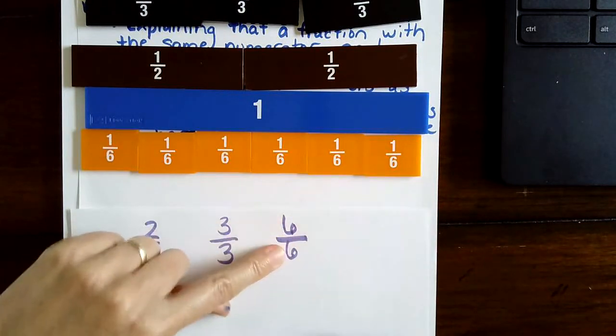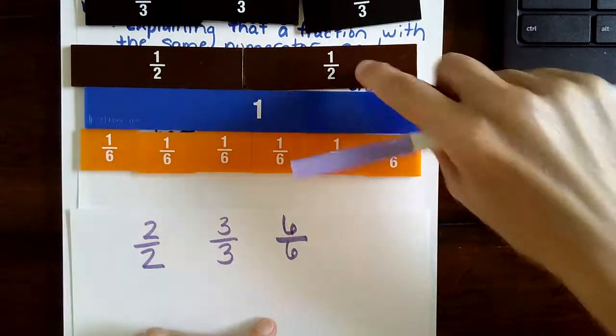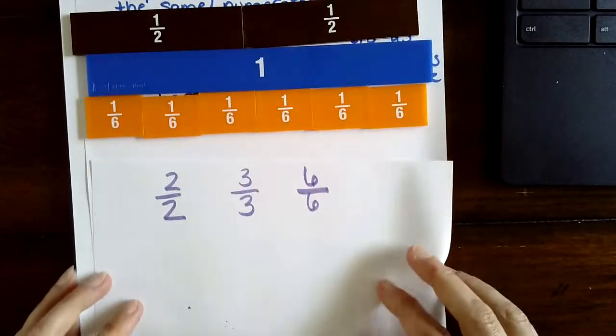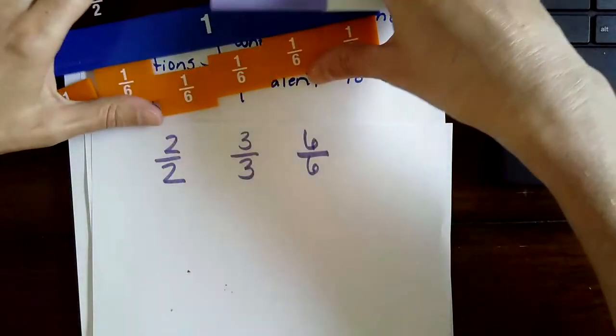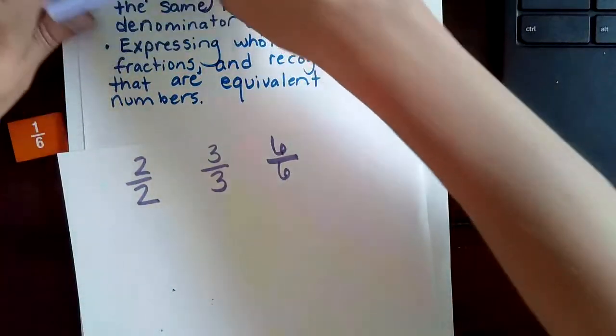When the numerator is the same as the denominator, that's exactly the same as one whole. Now we're going to look at expressing whole numbers as fractions.